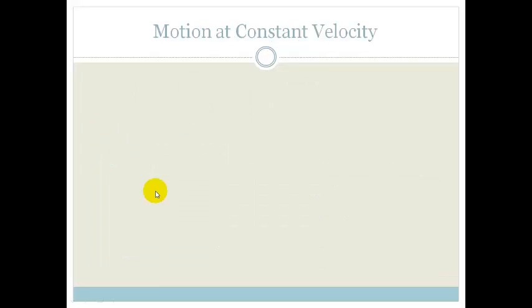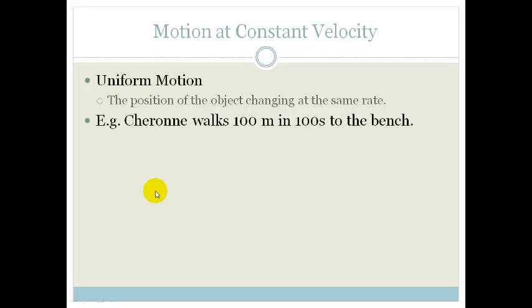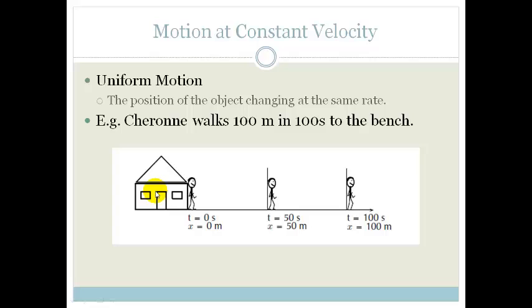Now let's look at traveling at a constant velocity. Constant velocity is a uniform motion — it means that the position of the object is changing at the same rate. So let's look at Chiron again, but this time she walks a hundred meters in a hundred seconds to the bench. So in fifty seconds she's gone fifty meters — you can see she's going at a constant rate.